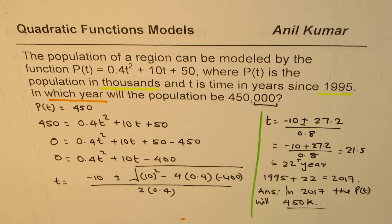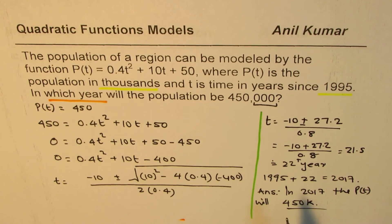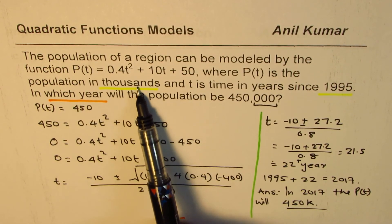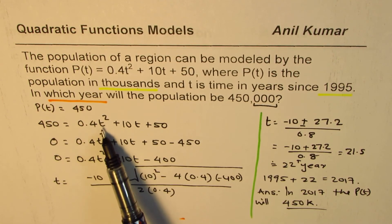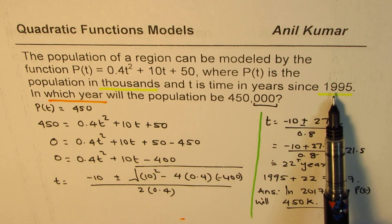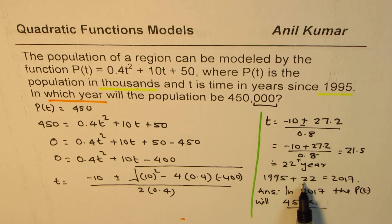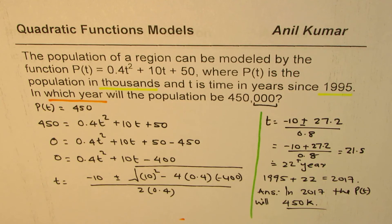So that is how you could actually solve such questions. I hope it's key to understand that population is given to you in thousands, so you should plug in 450 in your equation. Once you find time, it is time after 1995. So add those many years and then write down the year, which is expected to be 2017 in this case.